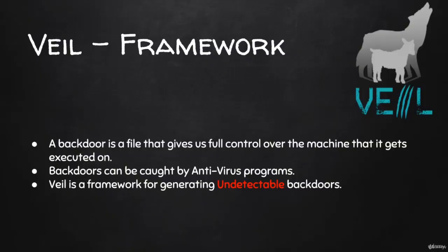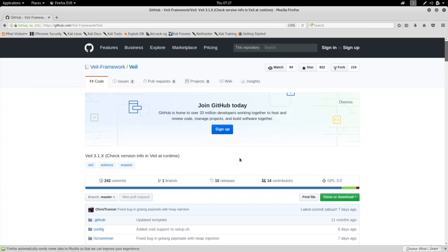In this lecture we'll learn how to generate an undetectable backdoor - a file that when executed on the target computer gives us full access and allows us to do anything on that computer. We're interested in generating a backdoor not detectable by antivirus programs, which is not very hard to achieve. We'll do this using a tool called the VIL framework, and I already have VIL's project page open.